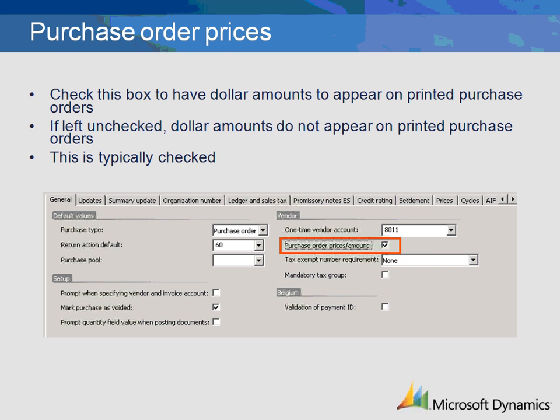Next is the Purchase Order Prices Amount checkbox. Check this box so that when purchase orders are printed, the prices appear on the purchase order. This box is almost always checked, as we want complete information with the purchase order to be printed so it can be passed along to the vendor for fulfillment.